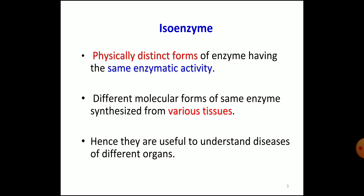These isoenzymes are synthesized from various tissues — sometimes from liver, sometimes from brain, or sometimes from heart. So we can understand the disease of different organs by estimating the different isoenzymes.